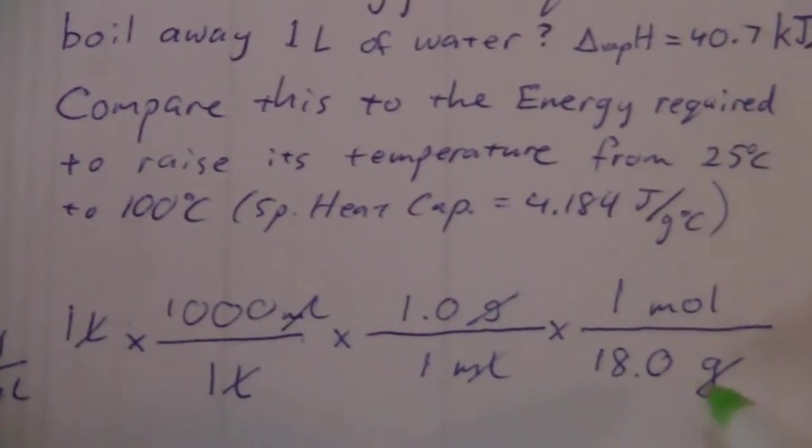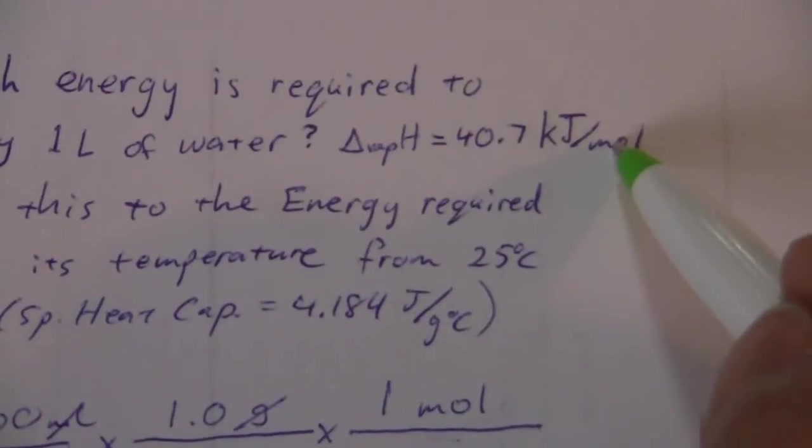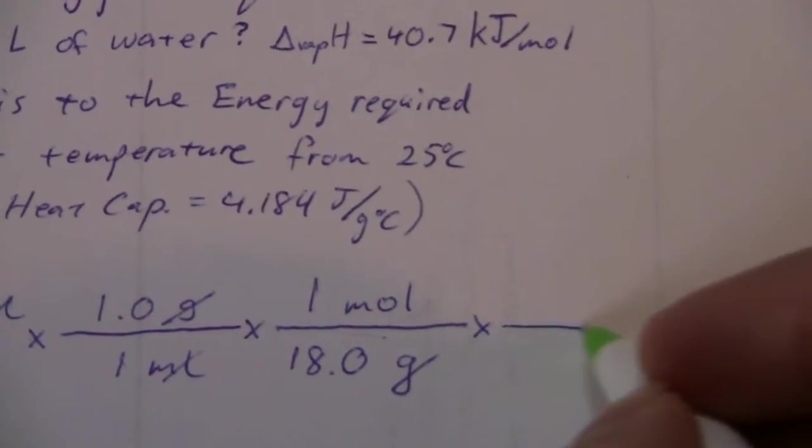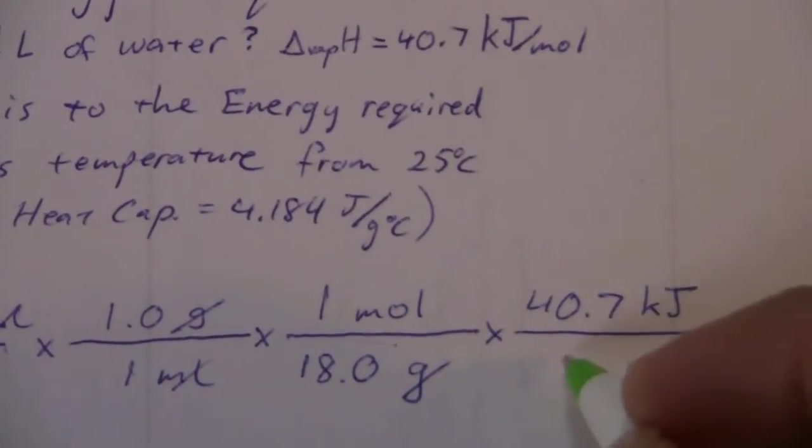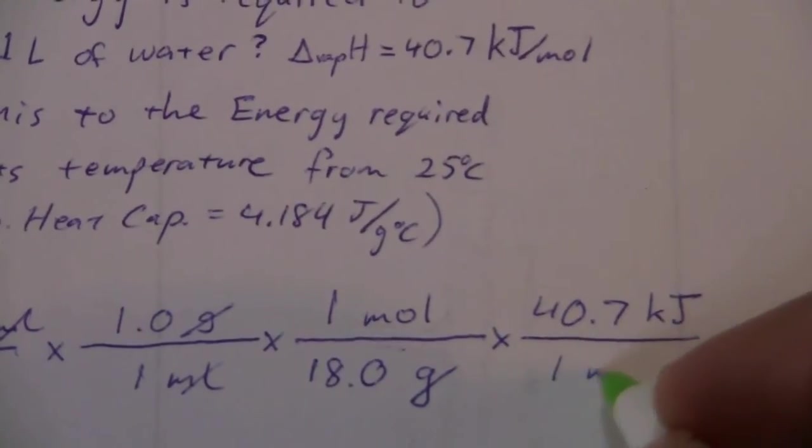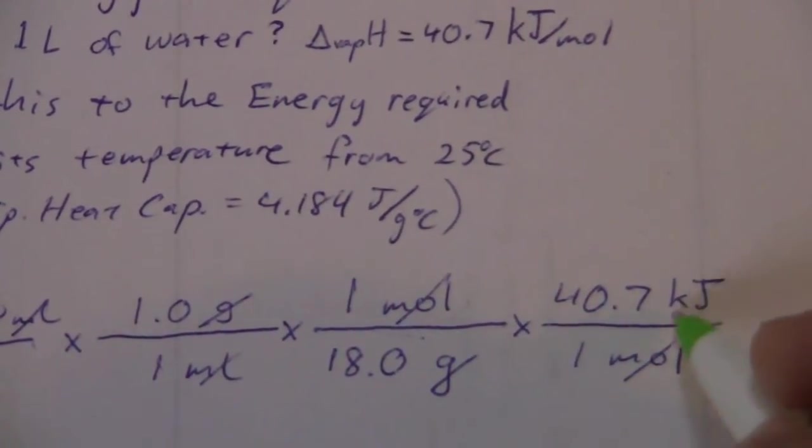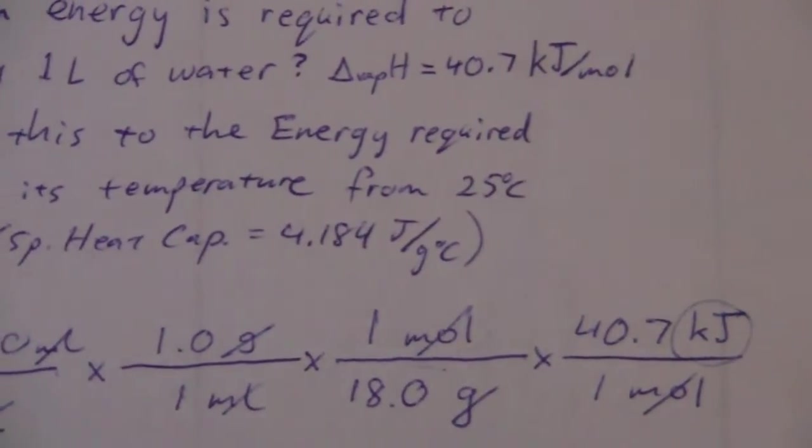So now, everything has canceled. We have moles. So all we have left is the remaining factor: there are 40.7 kilojoules per mole. Our moles will cancel and we'll be left with kilojoules.